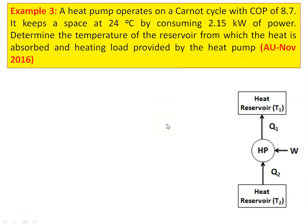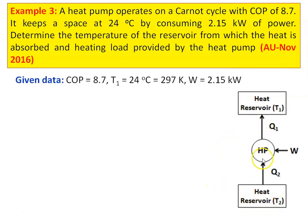Example number 3 from the Anna University question paper, November 2016: a heat pump operates on the Carnot cycle with a COP of 8.7. It keeps a space at 24 degree Celsius by consuming 2.15 kilowatts of power. Determine the temperature of the reservoir from which heat is absorbed and the heating load provided by the heat pump. The heat pump takes heat from a low temperature reservoir and supplies heat energy to a high temperature reservoir. COP is 8.7 and T1 is 24 degree Celsius, which is 297 Kelvin, and W equal to 2.15 kilowatts.